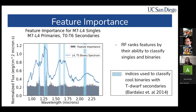The random forest also allows us to compare this to past research. Random forests can rank features based on their ability to classify singles versus binaries. If you take a look at this graph, it's showing an L4-T5 binary spectrum. The feature importance is shown in gray, along with the indices used by past research to identify single versus binary. This feature importance comes from the random forest test with T0 to T6 secondaries. There is some alignment in certain areas with the feature importance, but it doesn't align completely, and different random forest models have different feature importances.